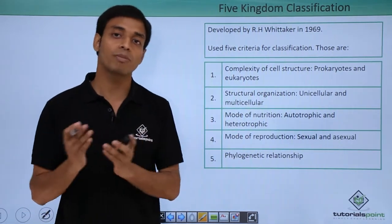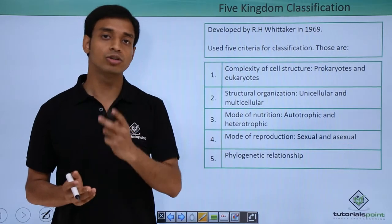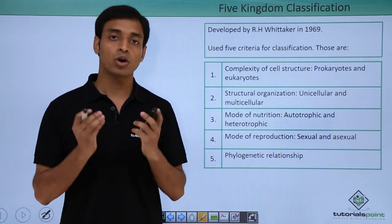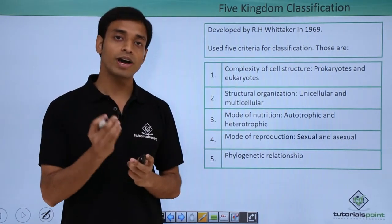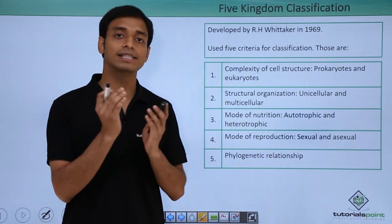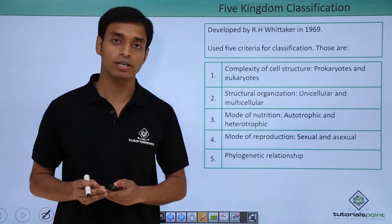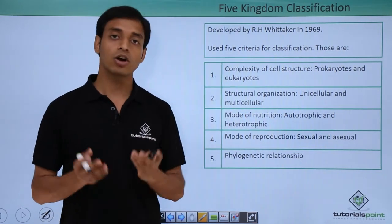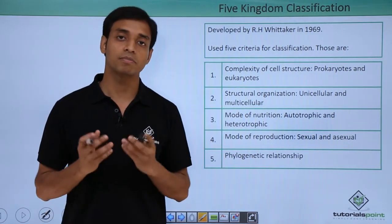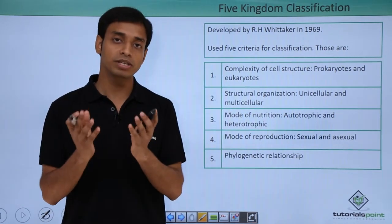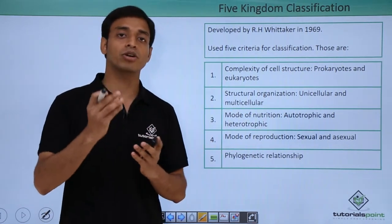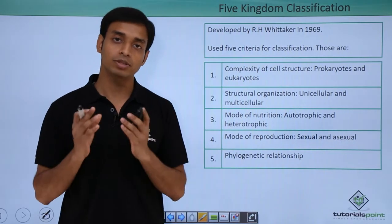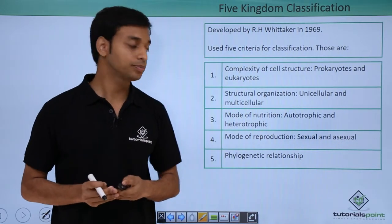Structural organization refers to whether the organism is unicellular or multicellular. Unicellular means organisms where one cell itself is the entire organism — for example, bacteria. Multicellular means a number of cells make up the organism, like us.